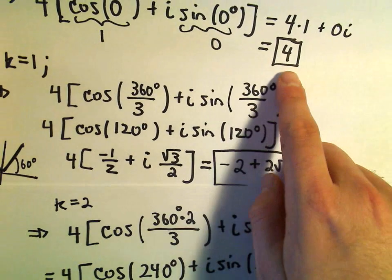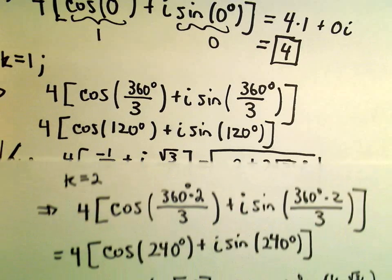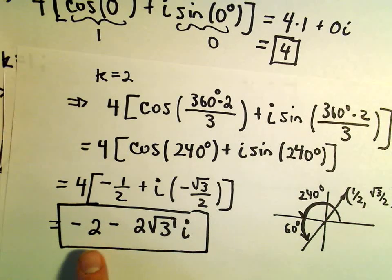So now it looks to me like we've got all of our roots. We found one of them to be 4. We've got negative 2 plus 2 root 3 i, and then we have negative 2 minus 2 root 3 times i.